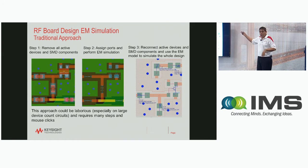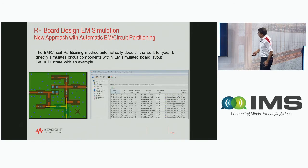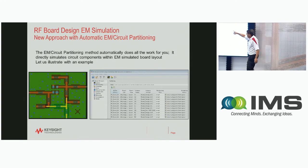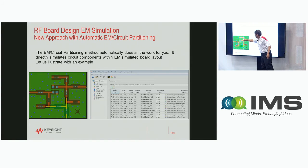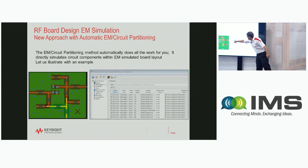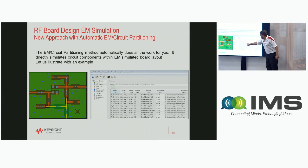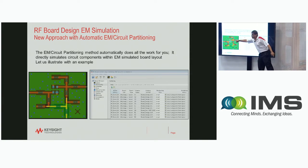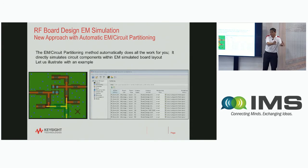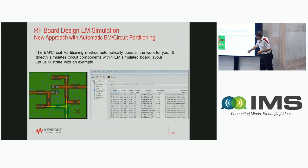You don't have to strip components, you don't have to put ports — everything is done behind the scenes automatically. The new approach is the EM circuit co-simulation partitioning, where ports are automatically created at the SMT components. The partitioning tells ADS which components you want to simulate at the circuit model level or at the EM model level, so you can partition your design accordingly.